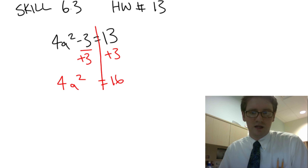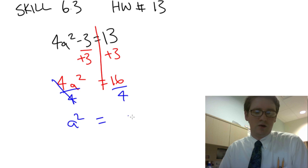Next I need to do the inverse of multiplication. Since 4 times a² is multiplying, I need to do the opposite, which is divide by 4. These cancel. I'm left with a² = 4. 16 divided by 4 is 4.